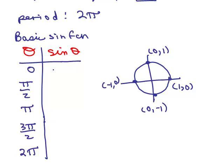So the sine of 0 is 0, the sine of pi over 2 is 1, the sine of pi is 0 again, the sine of 3 pi over 2 is a negative 1, and the sine of 2 pi is over here at 0 again. So you need to know the basic sine function.